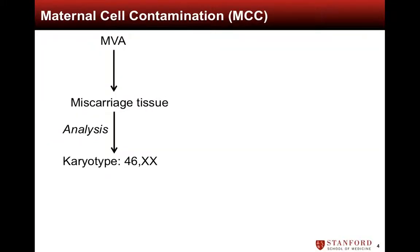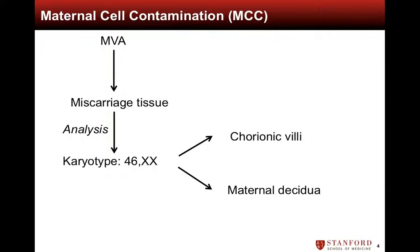A 46XX karyotype result from analysis of miscarriage tissue, however, can represent embryonic tissue in the chorionic villi or can be due to analysis of maternal decidua, which is referred to as maternal cell contamination, or MCC. We will further explain the terms chorionic villi and maternal decidua on the next slide.